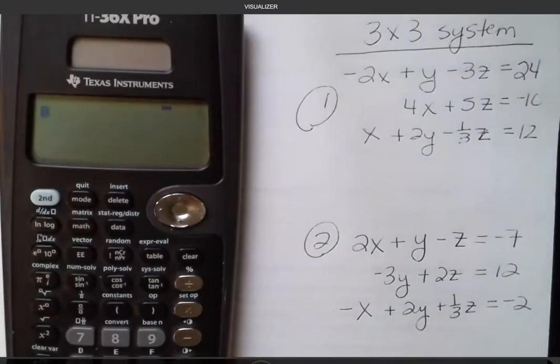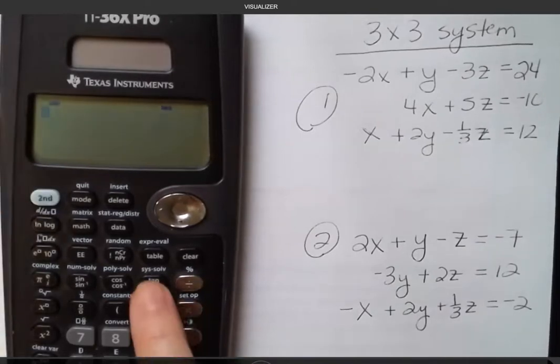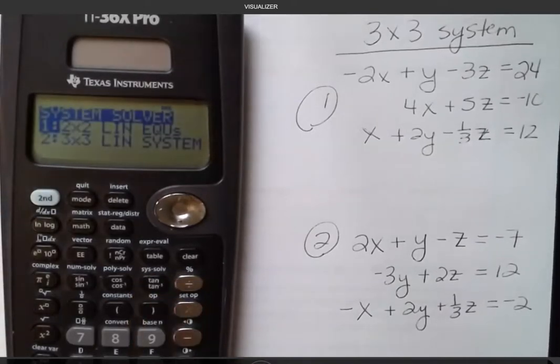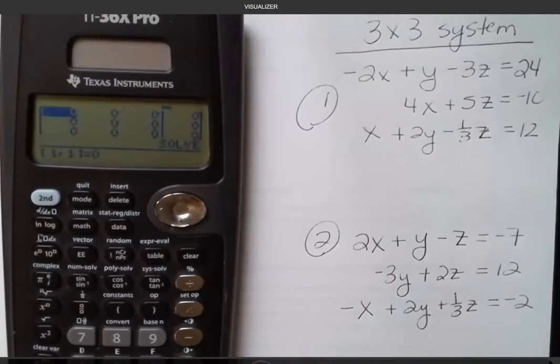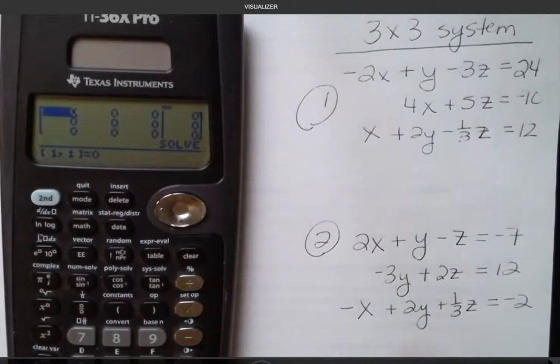The system solve button is right here above the tangent button, so we're going to hit second function system, and then you want to go down to a 3x3. I have another video showing you how to do the 2x2s. This is a 3x3 system, so you're going to hit enter. It looks very different than what your system looks like, but this is a matrix you can enter into.